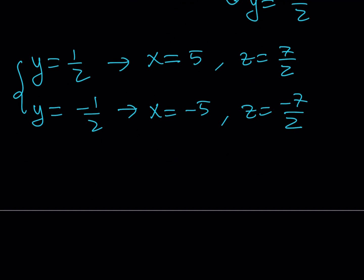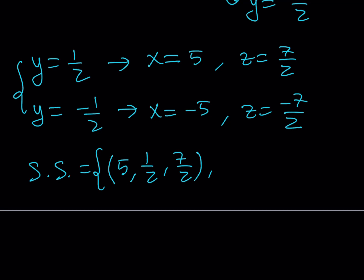So the solution set consists of two ordered triples: (5, 1/2, 7/2) and (negative 5, negative 1/2, negative 7/2). This system of equations has two real solutions, and we've found all of them.